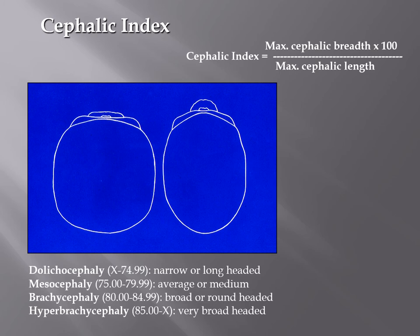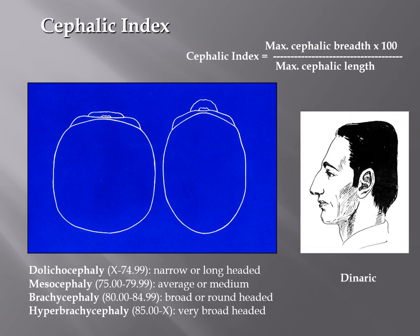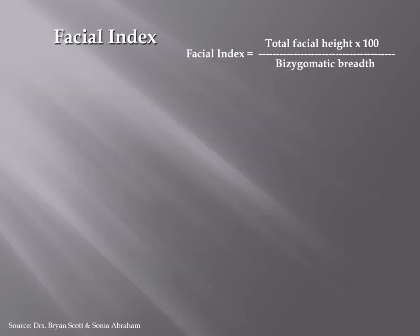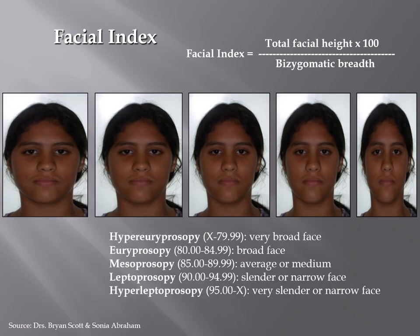The cephalic index uses internal measurements to determine brain size, though this comes with some error as it is only a best guess. The facial index looks at variations in the face — you can see different face types among human populations going from very wide to very thin faces. Each of these facial categories can be found within human populations across ethnicities. This is just part of the wide degree of variation that we see in our species — not delineated based on race or ethnicity.